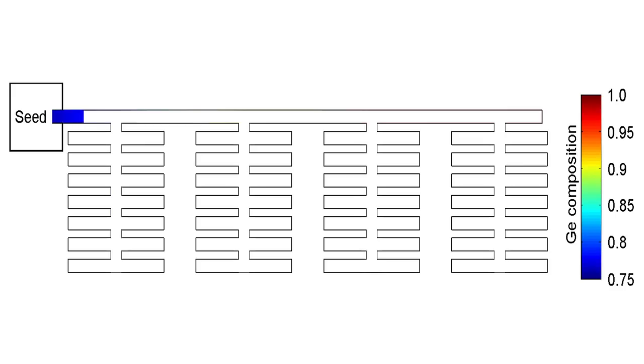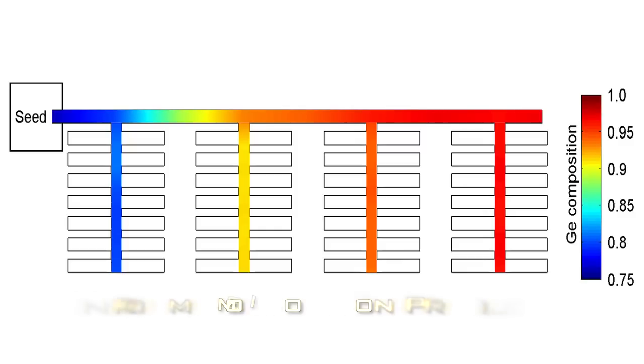In my research, I have added branches to this strip to increase the cooling rate because these branches efficiently dissipate the heat. This results in a uniform composition profile. This is ideal for device fabrication.